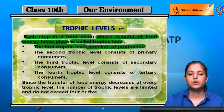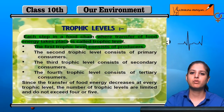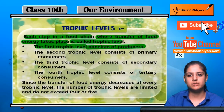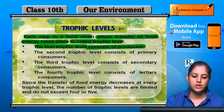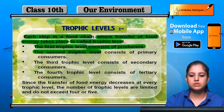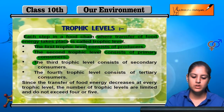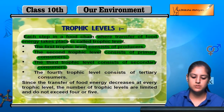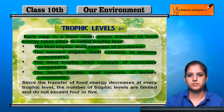The producers are the first trophic level — whether it is algae, green plants, grass, or flowers. The starting is always producers. They are the first trophic level. The second trophic level is the primary consumers, the third trophic level is the secondary consumers, and the fourth trophic level is the tertiary consumers.